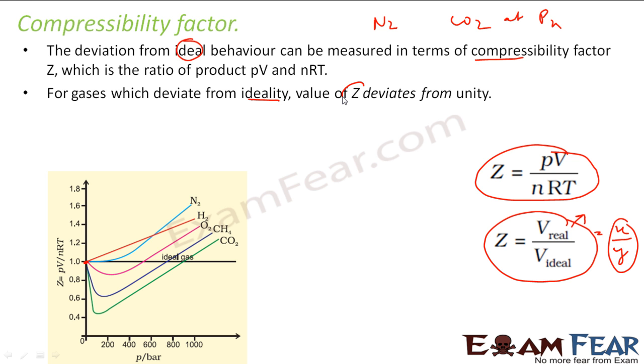But for nitrogen, if you see now, with increase in pressure, the value of z increases. For hydrogen, you see with increasing pressure, this value increases. For oxygen, it goes down, the value of z goes down and then increases with increased pressure. For methane, the value of z goes down, becomes negative and then it becomes 0 once again and increases. Here also, for carbon dioxide, it goes down and then increases.